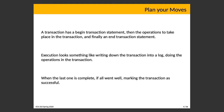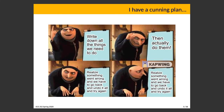A transaction has a begin transaction statement that denotes the beginning and says the following steps are all part of the same transaction. Then there is a list of operations — the file or data changes we want to make. Then there is an end transaction statement that says the transaction started earlier is now finished. This allows the transaction to be processed in a meaningful way.